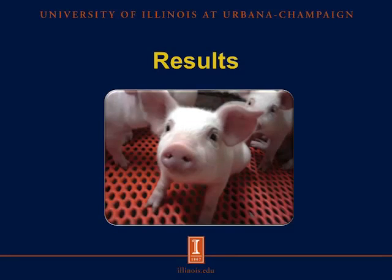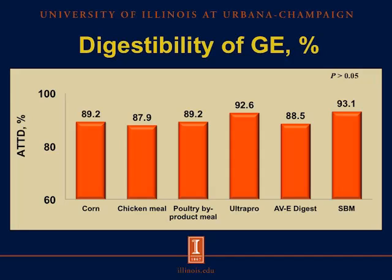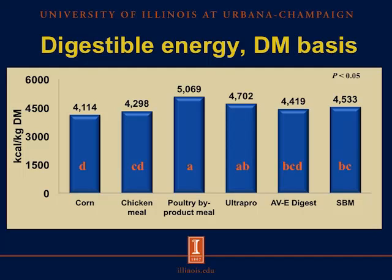Now let's move on into the results. We can see the digestibility of gross energy, with apparent total tract digestibility on the y-axis and each test ingredient on the x-axis. We observed no differences among test ingredients, indicating that the energy contained in each ingredient is well digested by pigs. Looking at digestible energy on a dry matter basis, we observed that the digestible energy was greater in poultry by-product meal compared with corn, chicken meal, ABE digest, and soybean meal. The concentration of digestible energy was not different in ultra-pro compared with ABE digest and soybean meal.